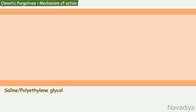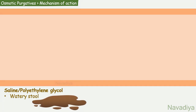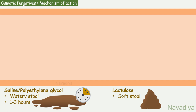Saline and polyethylene glycol produce watery stool within 1–3 hours, whereas lactulose forms soft stool and its effects appear after 1–3 days. As water is also lost along with osmotic purgatives, it is important to maintain adequate water intake when using them.